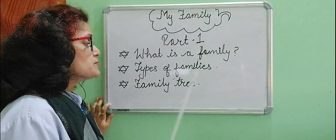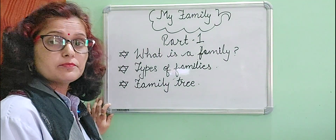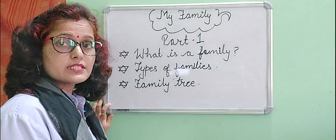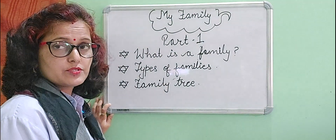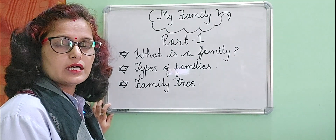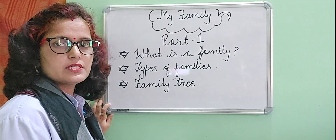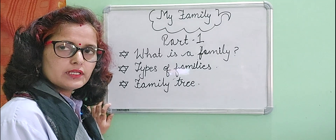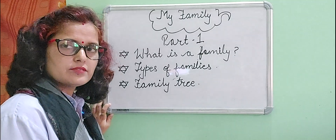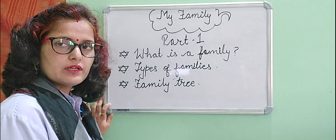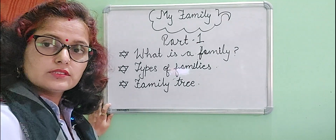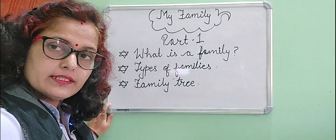The second topic is Types of Families. In this part, we will discuss types of families. Mainly, there are two types: small family, i.e. nuclear family, and joint family, means large family. One more type of family nowadays is single parent family.